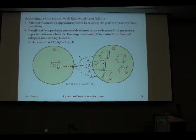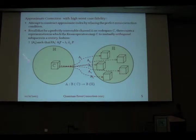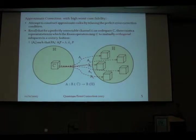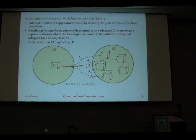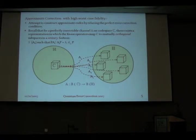Let us go back and see what the perfect error correction condition tells us. A channel A is perfectly correctable on C if it has a Krauss representation such that the Krauss operators map the code space to mutually orthogonal subspaces of the Hilbert space which are also undistorted — mere unitary transforms of the code space. In other words, there exists a set of Krauss operators AI such that PAI†AJP is proportional to delta_IJ. There are two components: the subspaces that the different Krauss operators map the code space to are mutually orthogonal, and they are just unitary transforms of the initial code space.